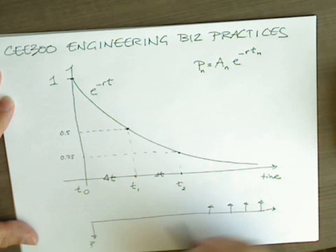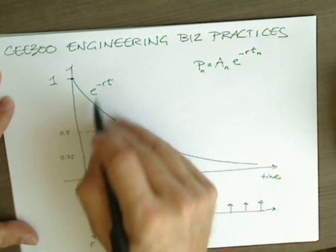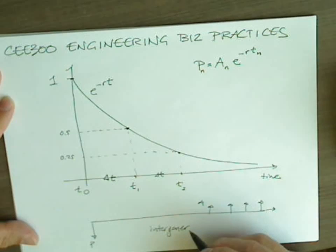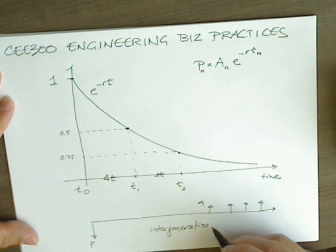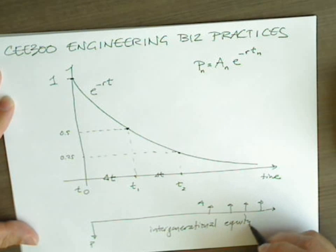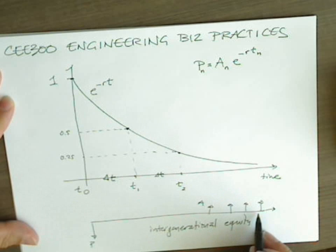We said in the previous video, this is the problem of intergenerational equity. Remember, the discount rate that is expressed here is an expression of time preference. Do we want our benefits now, or are we willing to be patient to wait until later?